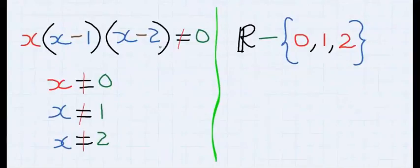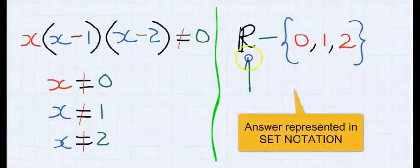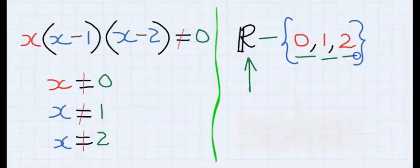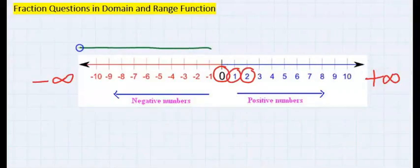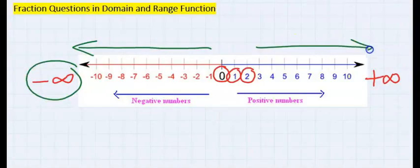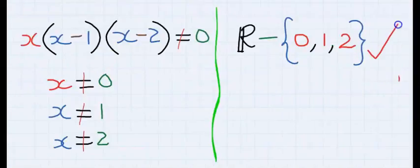Hence, our final answer is all real numbers are allowed except 0, 1, and 2. This means every number is allowed, both towards the negative infinity and positive infinity, with the exception of 0, 1, and 2. And this becomes our final answer.